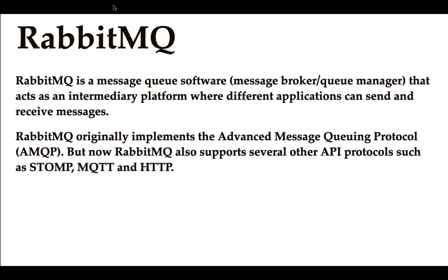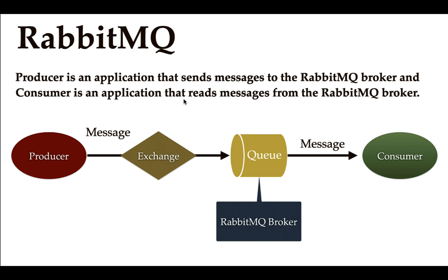RabbitMQ is a message queue that acts as an intermediary platform where different applications can send and receive messages. RabbitMQ originally implements the Advanced Message Queuing Protocol (AMQP), but now also supports several other protocols such as STOMP, MQTT, and HTTP. This is how RabbitMQ looks in a nutshell.